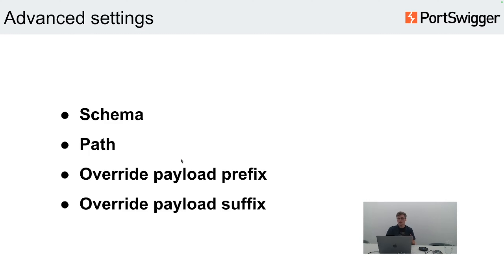We also have a couple of advanced settings that allow you to set up schema paths or other modifications to the payload. It's really useful when working with different cloud metadata. For instance, by default it overrides your payload with the HTTP schema even if you are working with HTTPS, because usually the metadata schema works through plain text HTTP. But if you'd like, you can disable this behavior by changing the checkbox.